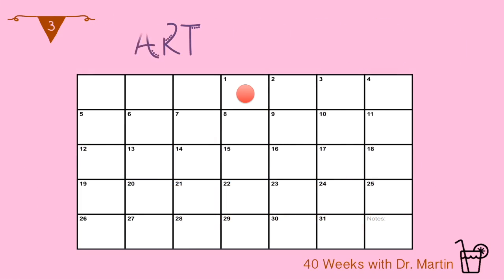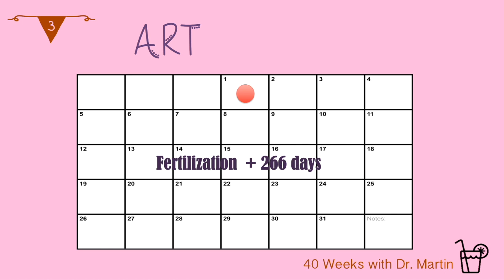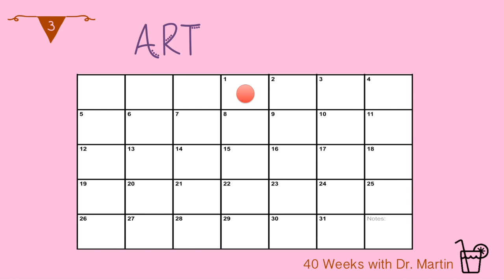For pregnancies resulting from artificial reproductive technologies or ART, the ART-derived date should be used. So if you had in vitro fertilization or IVF, you know the exact date of fertilization. You then add 266 days, which is 38 weeks, to that date.